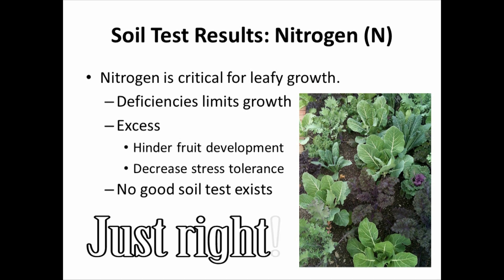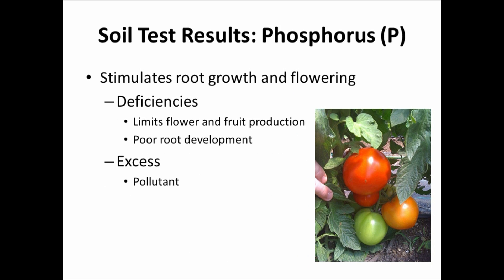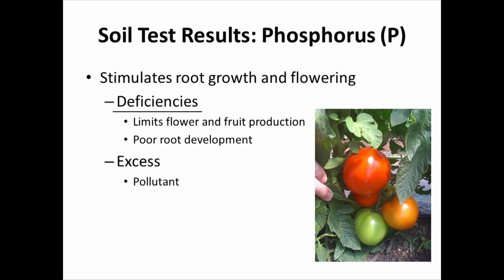Unfortunately, we do not have a good soil test for nitrogen at the moment. Phosphorus is a nutrient that is much easier to manage. It's very important for stimulating root growth, especially for new plants, and for inducing flowering and having good, healthy fruits and vegetables. If you're short on phosphorus, you're going to have limited flower production, limited fruit production, and poor root development.